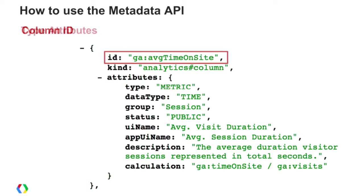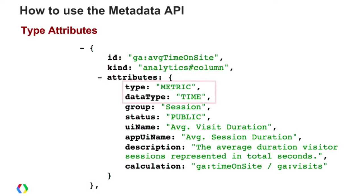We've provided a list of attributes that make sense when you're trying to build a UI. The first area is the type attributes — there are two of them. One identifies whether this is a dimension or metric, and then we have the data type, which tells you what the data value being returned is: time, percent, float, or integer. This is good for formatting, so you understand the format of that value, since in a JSON response these are all basically strings.